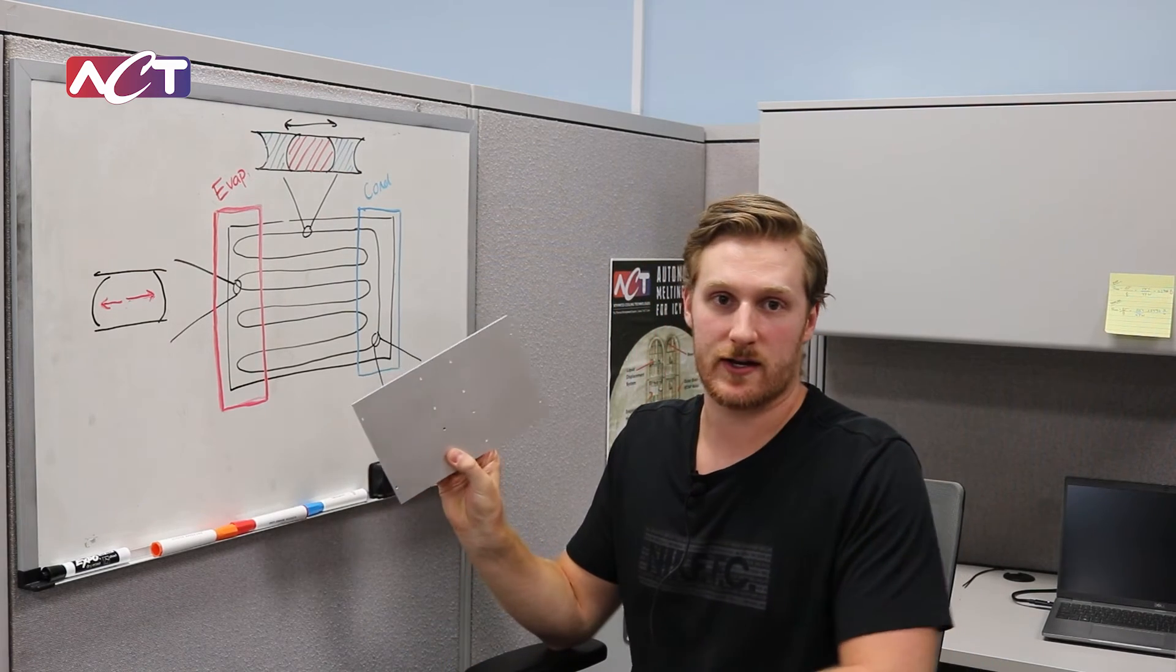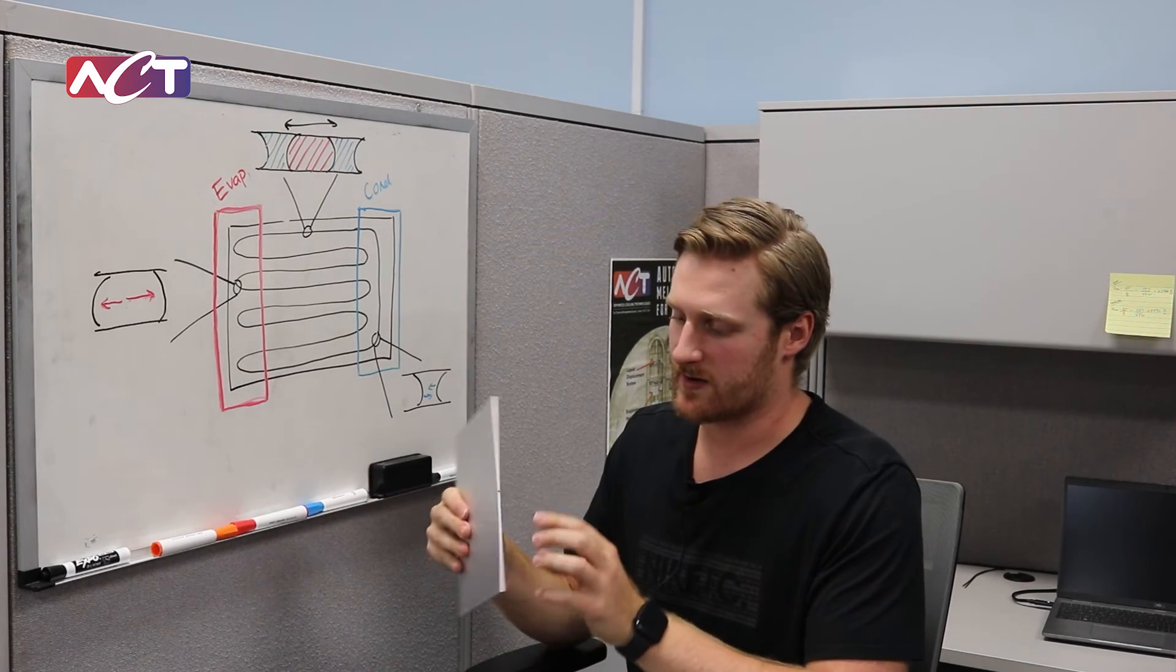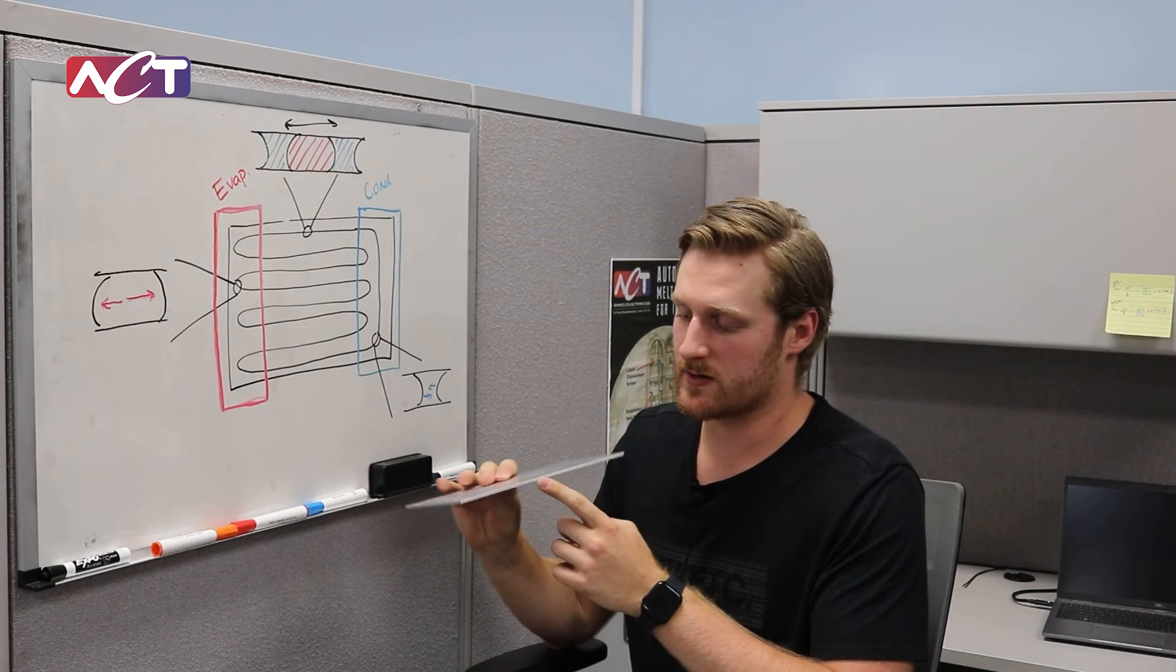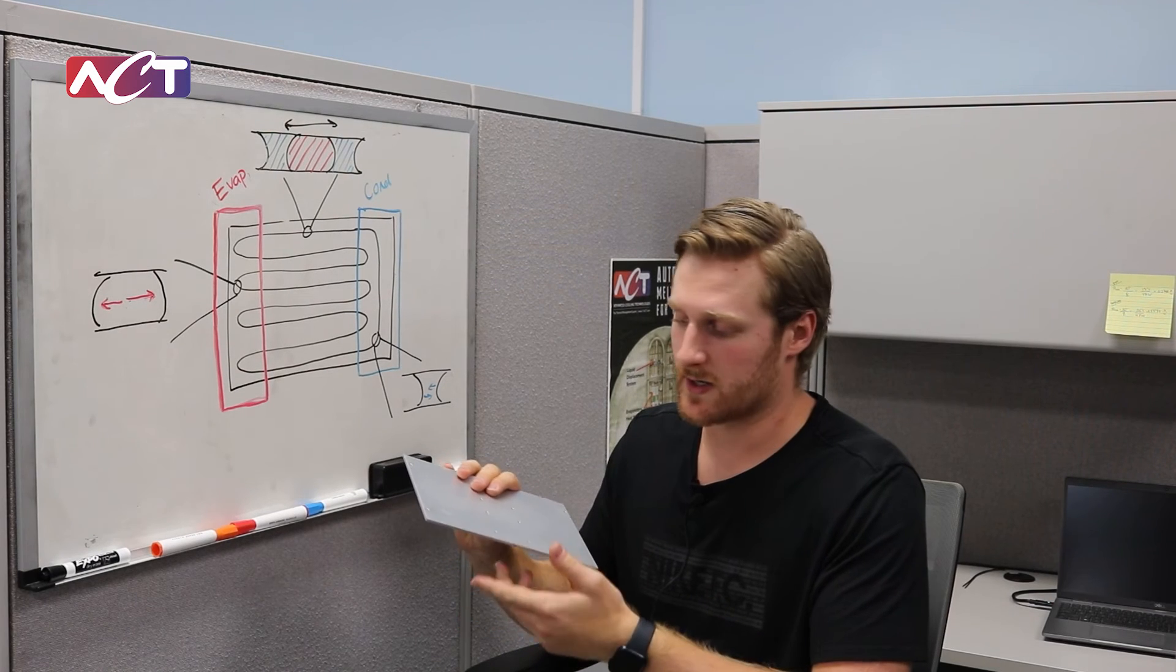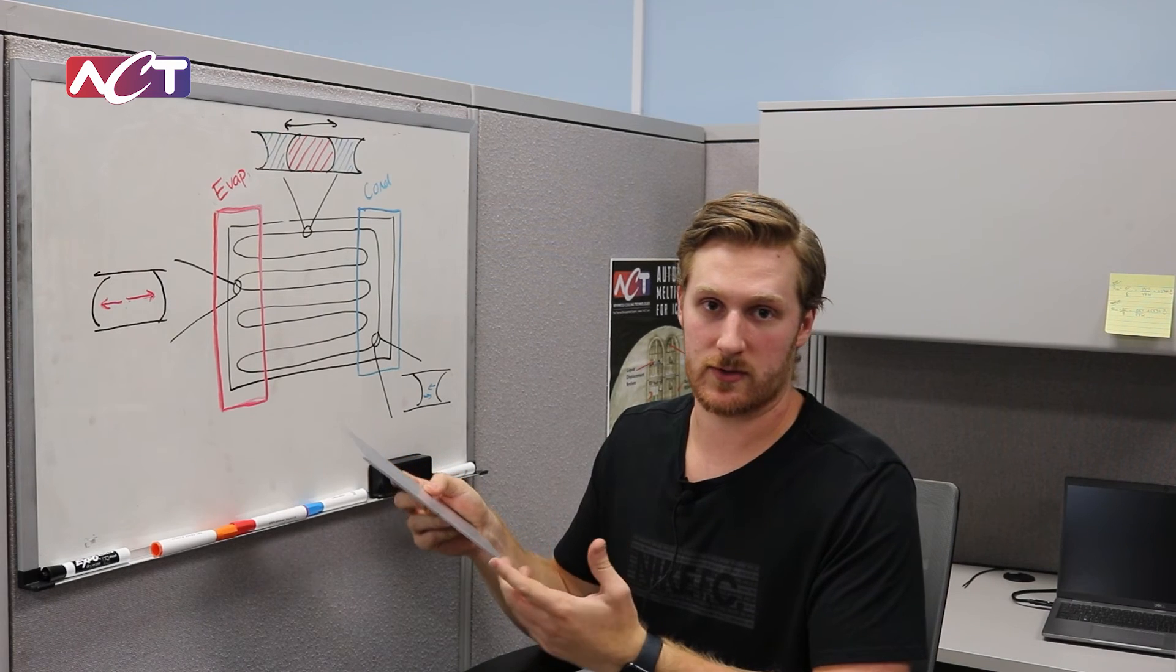And then we have a second way that we can manufacture these which is through vacuum brazing. With this one we just have a single fill tube on the side here where nothing is welded yet. But this is a second type of manufacturing that we can do for developing PHPs.